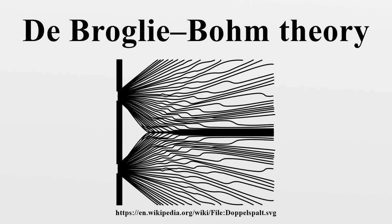The ontology of de Broglie-Bohm theory consists of a configuration of the universe and a pilot wave. The configuration space can be chosen differently, as in classical mechanics and standard quantum mechanics. Thus, the ontology of pilot wave theory contains the trajectory we know from classical mechanics and the wave function of quantum theory. At every moment of time there exists not only a wave function, but also a well-defined configuration of the whole universe. While the ontology of classical mechanics is part of the ontology of de Broglie-Bohm theory, the dynamics are very different.